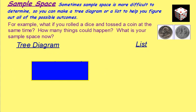Sometimes sample space is more difficult to determine. You can use a tree diagram or a list to help you figure out all of the possible outcomes. For example, what if you rolled a dice and tossed a coin at the same time? Now how many things could happen? What is your sample space now?